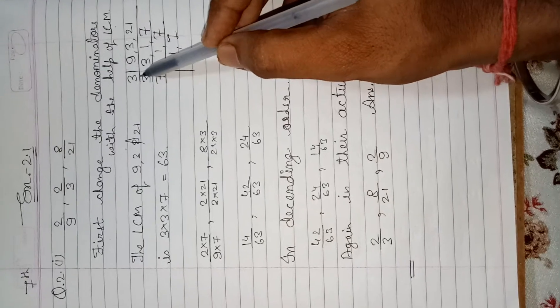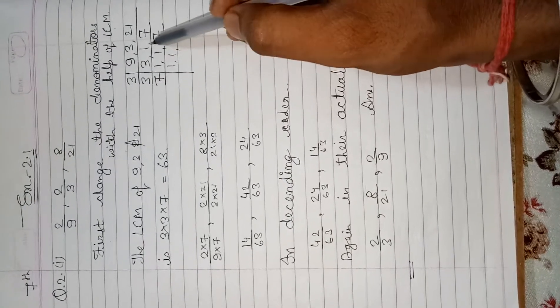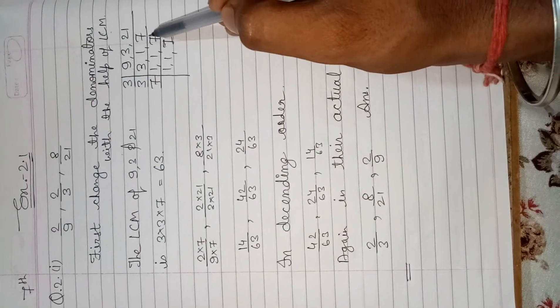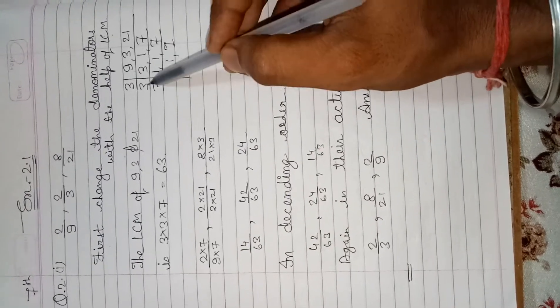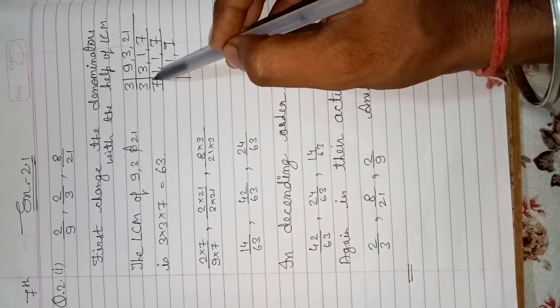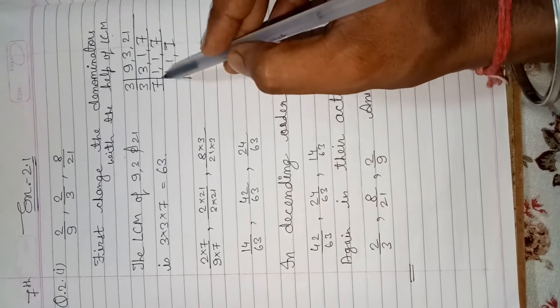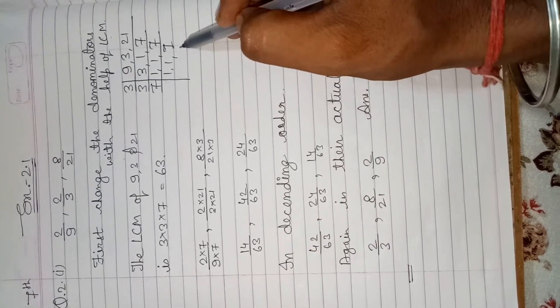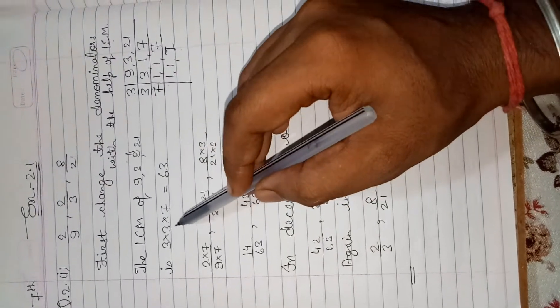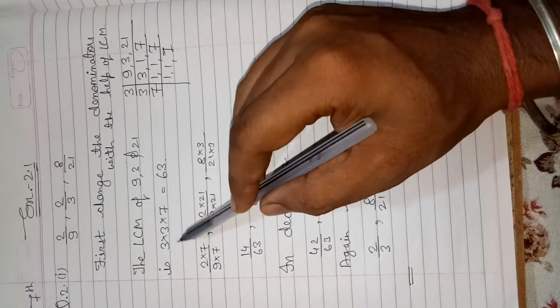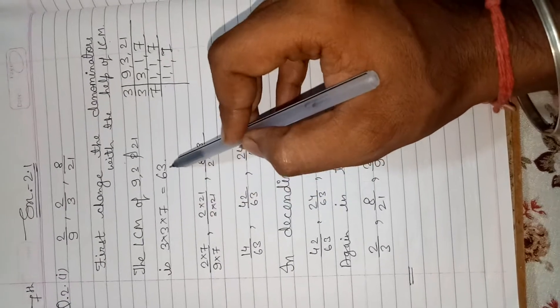Now, the LCM of 9, 3 and 21 is first divided by 3. Then 3 times 3 is 9, 3 times 1 is 3 and 3 times 7 is 21. Now, again divide by 3. 3 times 1 is 3, 1 as it is. And 7 is not a multiple of 3, so 7 as it is. Now, divide by 7. The LCM of 9, 3 and 21 is 3 into 3 into 7. Then 3 times 3 is 9, 9 times 7 is 63.